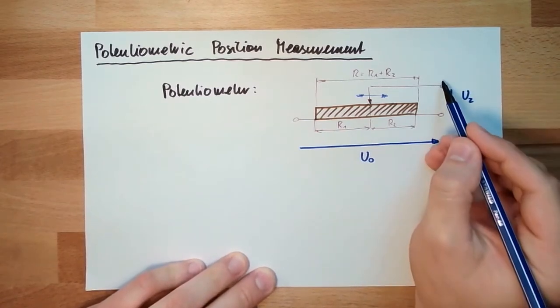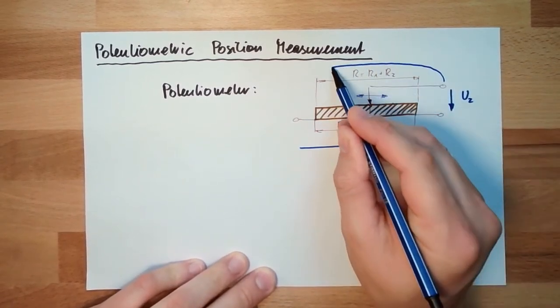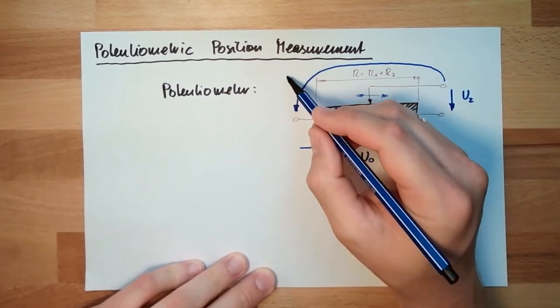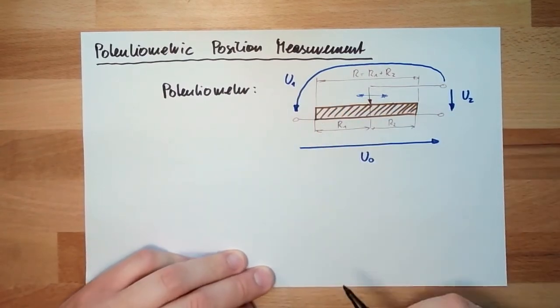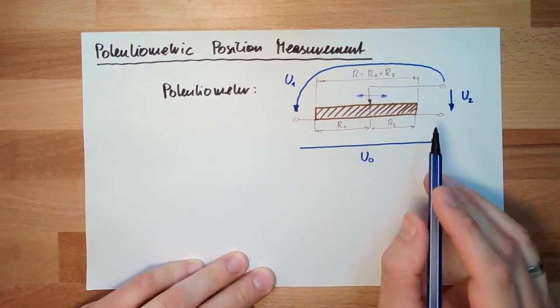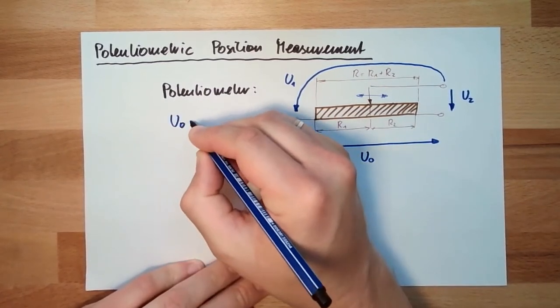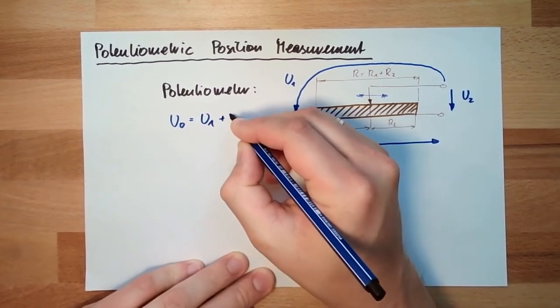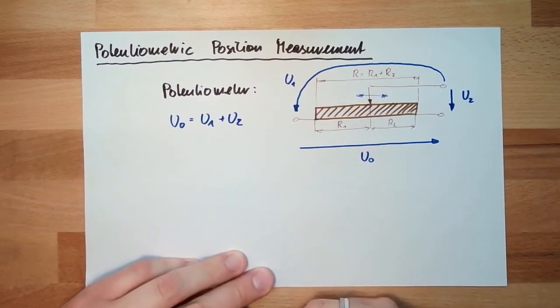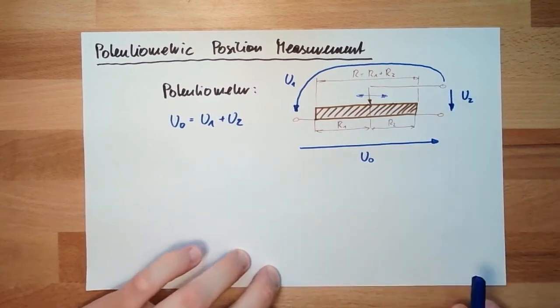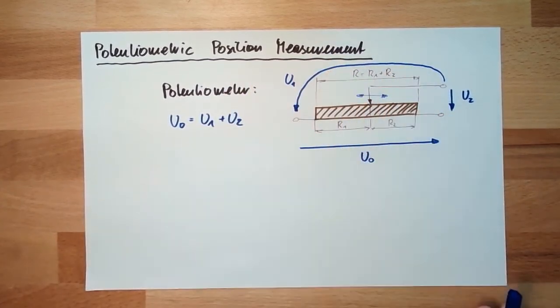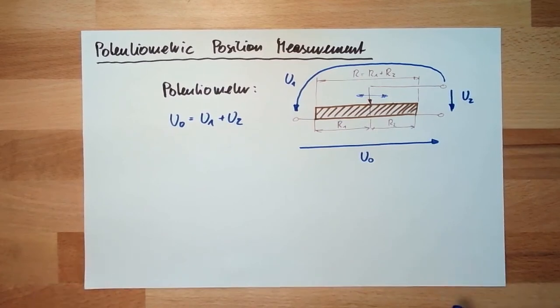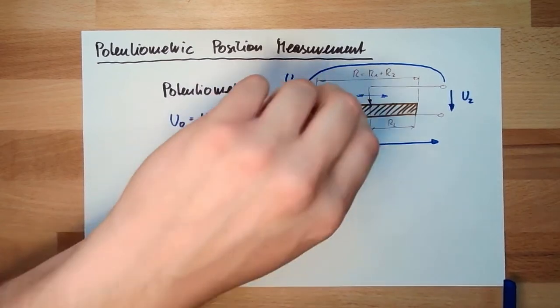Or I measure the voltage between these two, U1. The same thing applies: U0 is U1 plus U2. The voltages have the same proportion like the resistors, and if I measure the voltages, I measure the position.